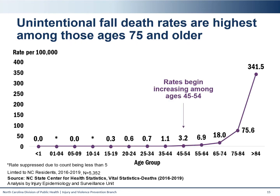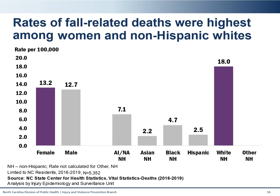When looking at fall-related death rates by age group, we see that the highest burden is among older adults. Rates begin increasing at the 45 to 54-year-old age group and exponentially increase with age. Rates more than quadruple between the 75 to 84-year-old age group and those over 84. For the deaths between 2016 and 2019, we have calculated rates by demographic group for comparison. Females have the largest burden of fall-related deaths, though closely followed by males. When looking at the breakdown by race and ethnicity, we see that non-Hispanic whites have the largest burden, with a rate of 18 fall-related deaths per 100,000 persons.